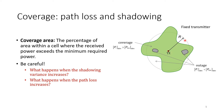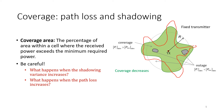You would want 100% coverage, but there are two important questions. First, what happens when the shadowing variance increases? With more variance, you expect less coverage intuitively. So as shadowing variance increases, coverage decreases. The second question is: what happens when the path loss exponent increases?